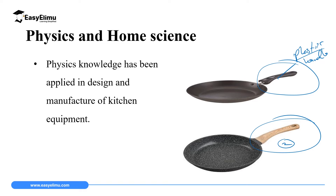In another pan, you can see they have used wood — wood is a good insulator. So home science uses the idea of insulators to make kitchen equipment, especially handles, to avoid one from being burnt. Sometimes we also use the knowledge of physics in terms of measurement like mass to determine the ratios in which you can mix different ingredients of food to make it taste better.